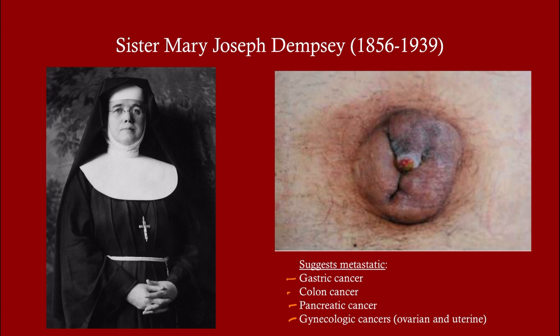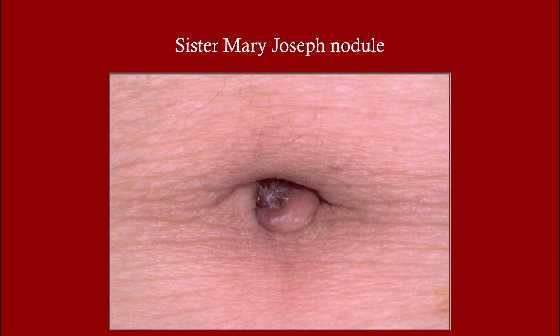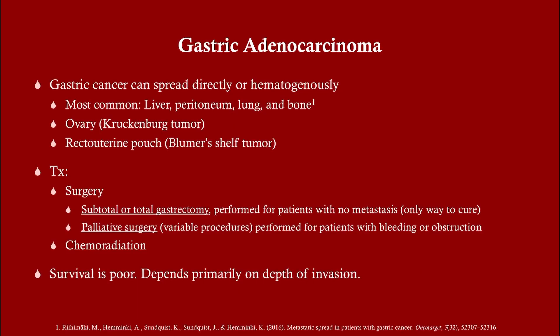They all occur in the abdomen and pelvis, and what they have in common is that they are all adenocarcinomas. The Sister Mary Joseph nodule does come up on your exam. Gastric cancer can spread directly or hematogenously — the typical suspects are liver, lung, and bone. It can also spread to the ovary, which is called a Krukenberg tumor. The treatment for gastric cancer is subtotal or total gastrectomy, provided it has not spread. Otherwise, treatment is palliative. The only hope of cure is gastrectomy. Chemoradiation can also be done, but gastrectomy is the only hope for cure.